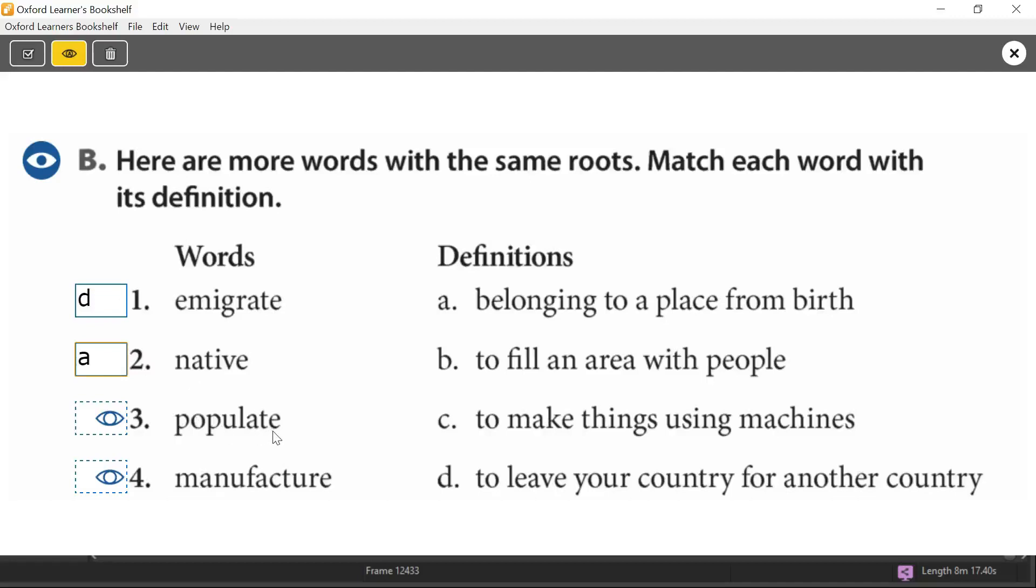Populate. What's the key root here? The root is pop. P-O-P. And if you remember, pop meant people. Connected with the meaning of people. So we have to look for that meaning here. Excellent. B. To fill an area with people. Do you think that's the correct answer? Yes, I think so. Let's check. Excellent.